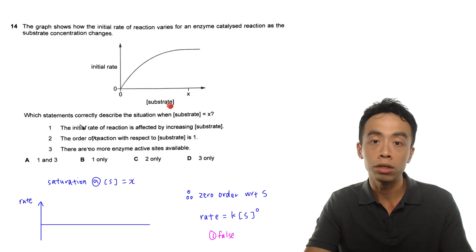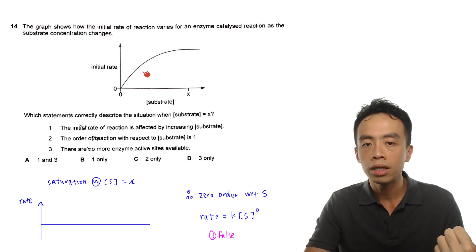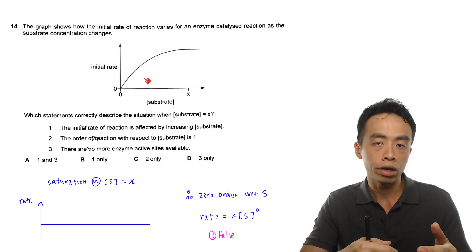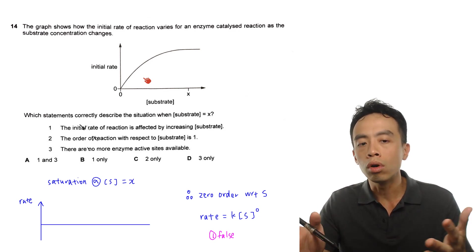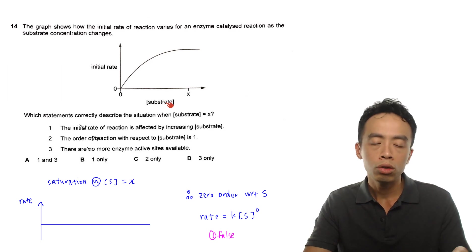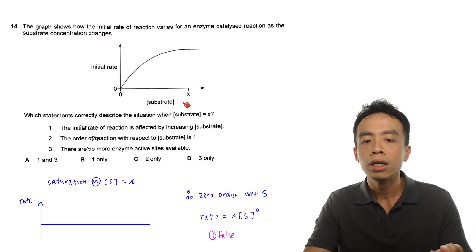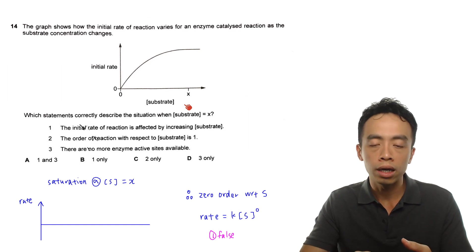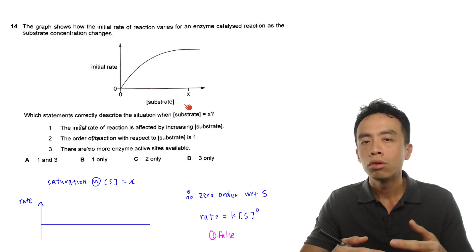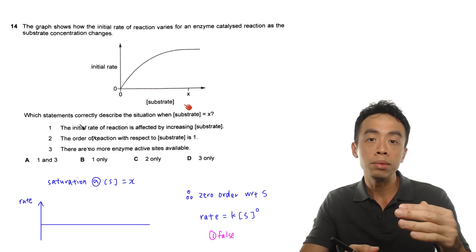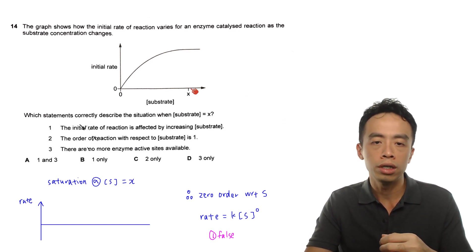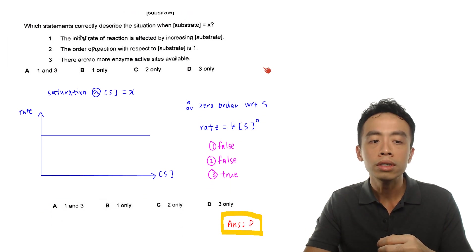At the beginning when the amount of substrate is low, as you increase substrate, there are enough enzymes to handle all the substrate. The rate of the reaction will increase because there are enough enzymes to convert substrate to product. But eventually when you increase substrate concentration to a very high extent such that it exceeds the enzyme concentration, there is too much substrate and not enough enzymes. The rate of reaction is then limited by the concentration of enzyme. At substrate concentration equal to X, we have saturation.